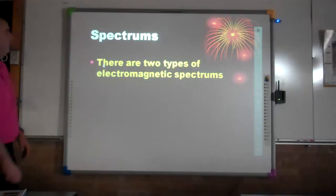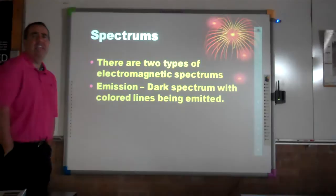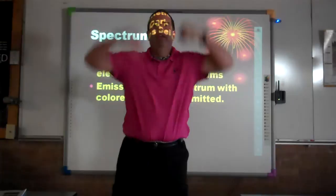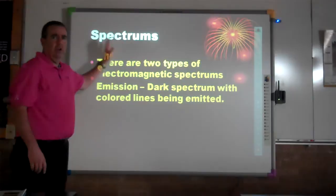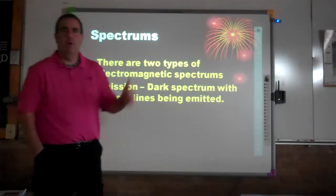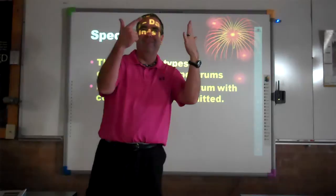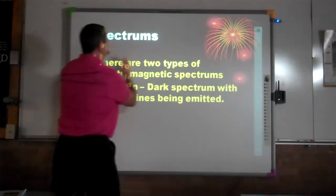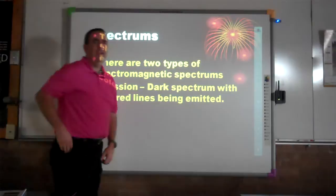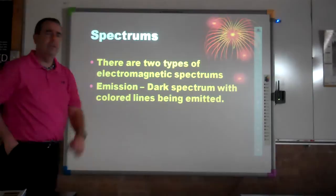There are two types of electromagnetic spectra. The first is an emission spectrum — when you emit, you give off. It's a completely black spectrum with certain colors given off along the way. Think of your rainbow: Roy G. Biv — red, orange, yellow, green, blue, indigo, violet. Maybe there are a couple of red lines, a yellow line, and a few blue lines for a certain element. That's its fingerprint, and that element will always have those fingerprints.